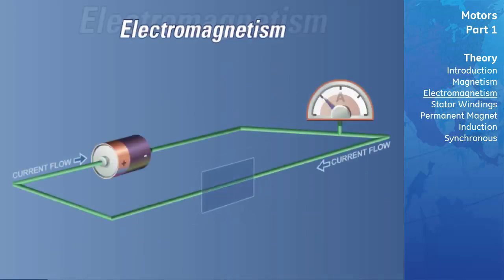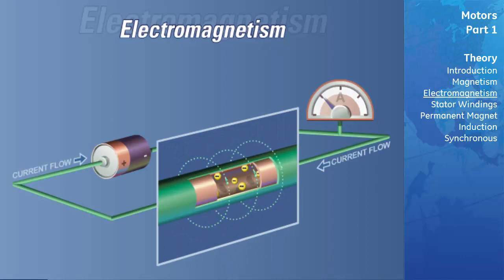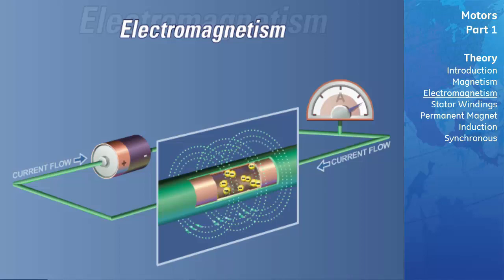When current passes through a conductor, a magnetic field is induced around the conductor. The strength of the magnetic field will increase and decrease with an increase or decrease in current flow.